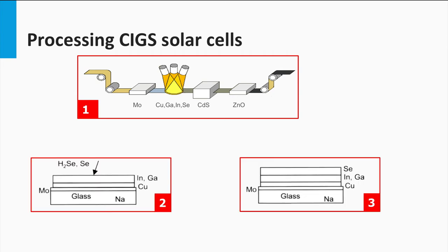Another option is to deposit a selenium rich layer on top of the initial deposited alloy, and this is annealed. Because of the variety and complexity of the reactions taking place during such selenization co-evaporation process, the properties of CIGS are difficult to control.